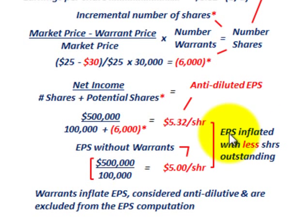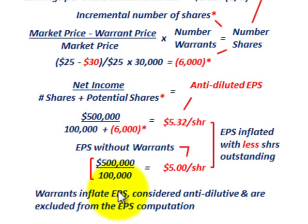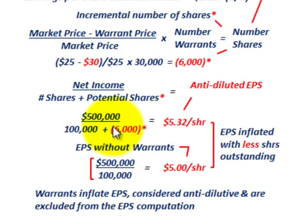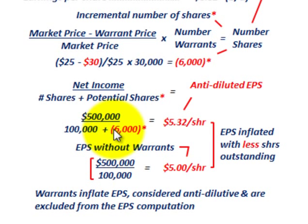The earnings per share is inflated with the lower number of shares outstanding, and that is not permissible per the rules and regulations. So you can't include those warrants in your calculations — the warrants inflate our earnings per share, it's considered anti-dilutive, and they are excluded from the earnings per share computation. We would have issued 30,000 shares of common stock for the warrants, but using the treasury stock method we could have bought back 36,000 shares, giving us that negative 6,000 shares.